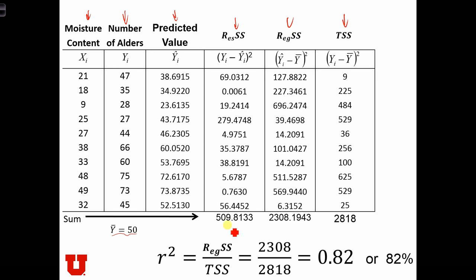So we have residual SS equal to this, regression SS equal to that, and total sum of squares equal to that. Right away, we can see that the regression sum of squares is much larger than the residual sum of squares, so we're probably going to have a pretty high r-squared.